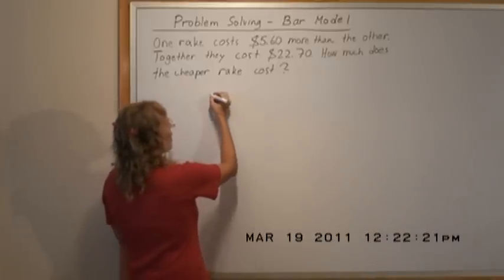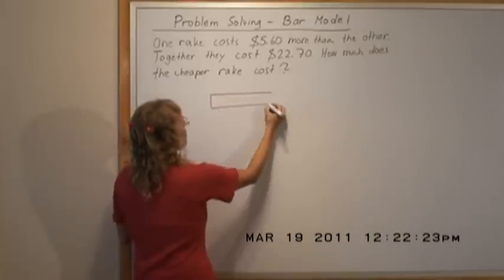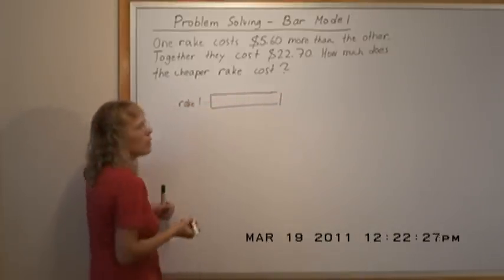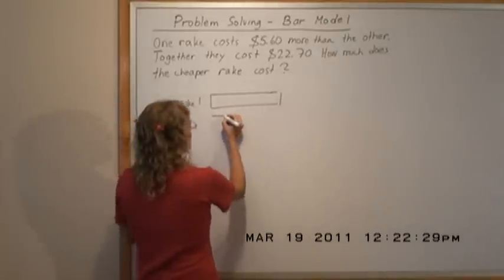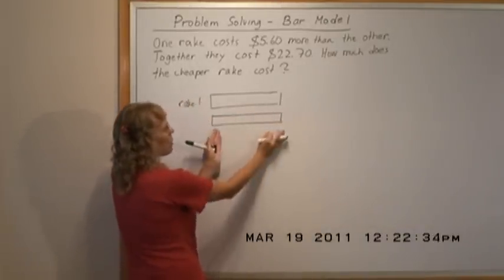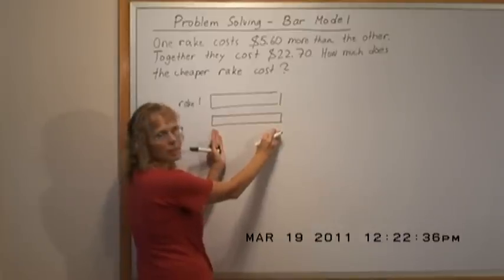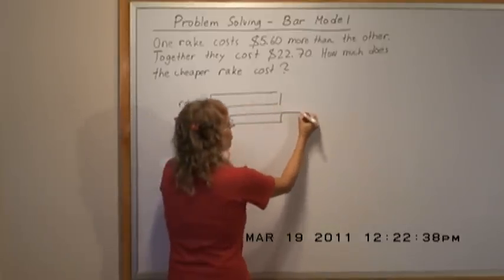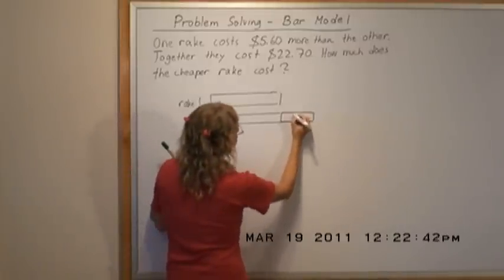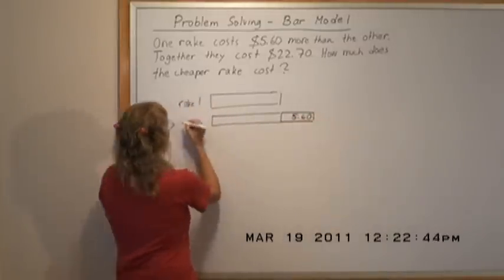We draw the one rake's price here as this bar. Rake one, and then we draw the other. The other costs some more, so we draw a bar for it that is the same as here, and then the part that it costs more. It costs $5.60 more. Rake two.